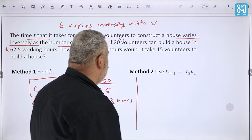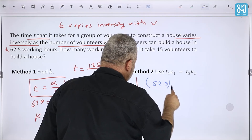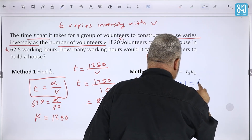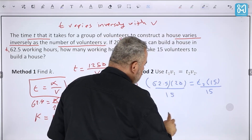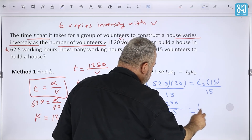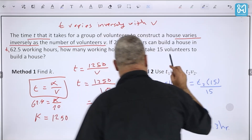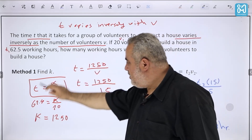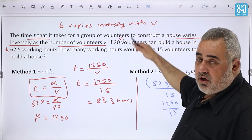Using the formula method: t1·v1 = t2·v2, so 62.5 × 20 = t2 × 15, which gives 1250/15 = t2 ≈ 83.3 hours. This method is faster because you find the answer directly without first finding k separately.